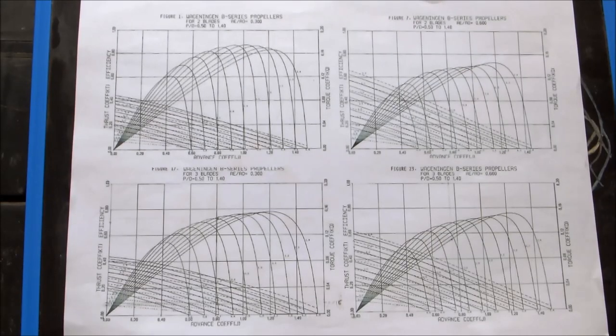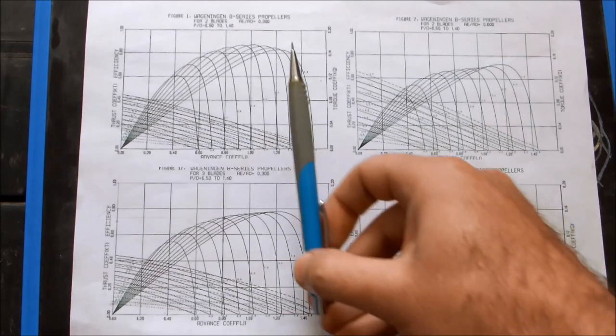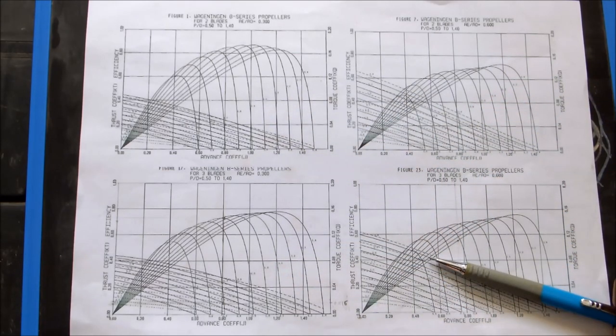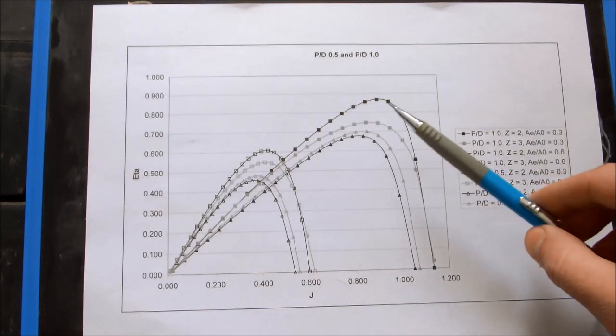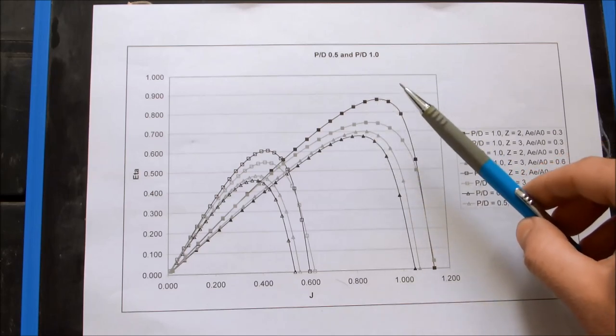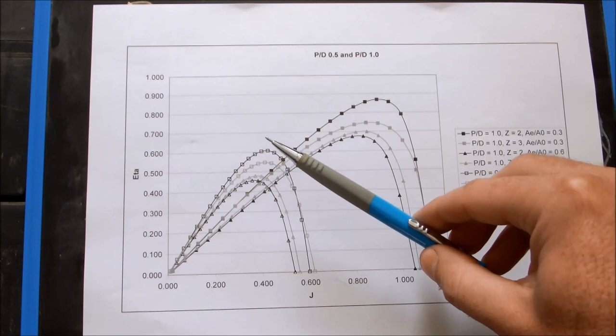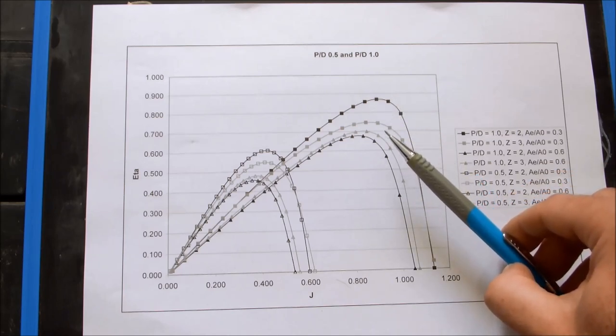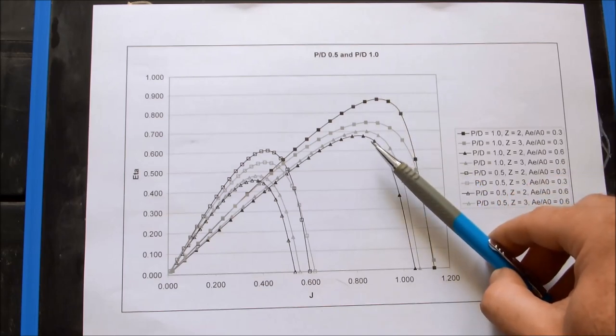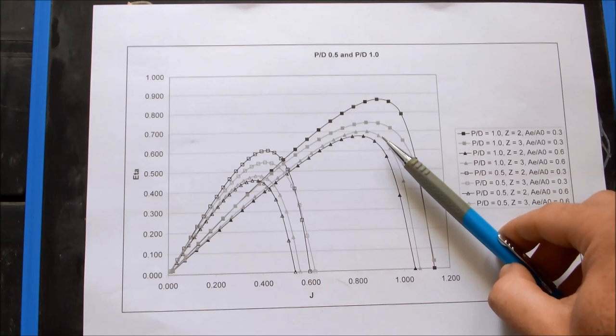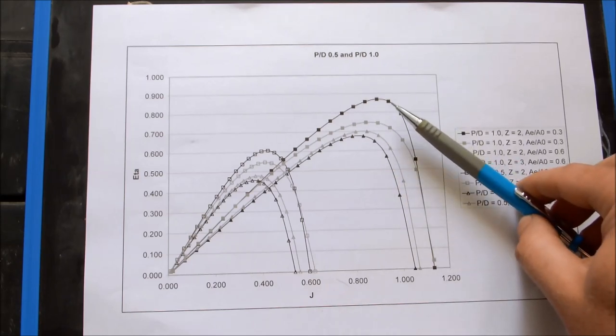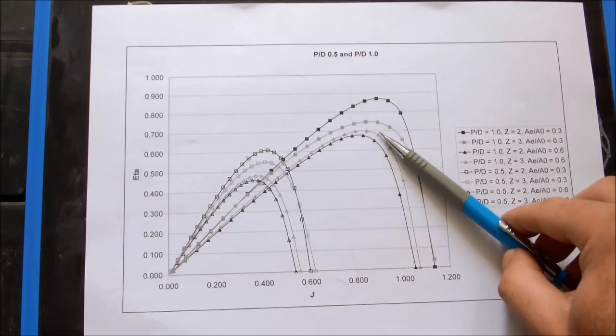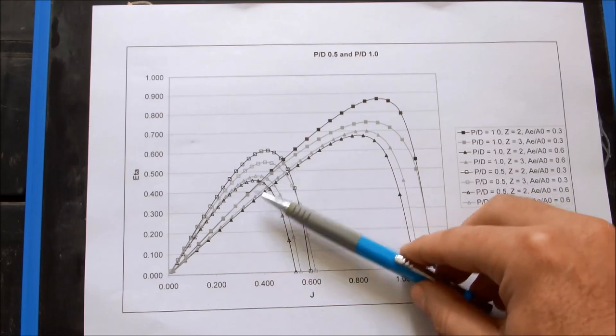If we take another look at the Wageningen series propellers to better see the comparison between area ratios and blade count. I have extracted two curves from each and superimposed them on top of one another. These four curves all have a pitch to diameter ratio of 1. This has a pitch to diameter ratio of 0.5. These two dark curves each have a blade count of 2. The grey curves each have 3 blades. Here you can see there's a very big jump as you increase area ratio for a 2 blade prop. The drop is less noticeable for a 3 blade prop. Also noticeable is the fact that for low area ratio, 2 blades is better than 3. But at high area ratio, 3 blades is better than 2. That same trend applies to the lower pitch to diameter ratio.